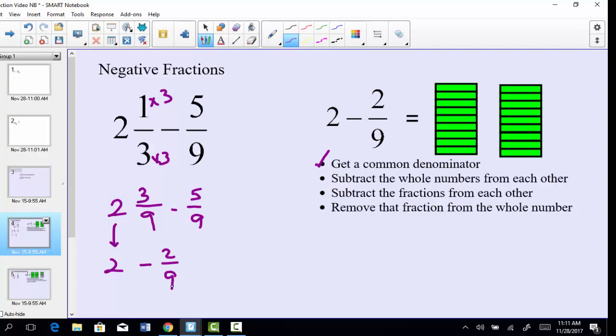So in other words, we have full 2. So if we take a look over here to the right and we look at this nice picture, we have two wholes and we want to pull out only two parts of the 9ths. We want to pull out those two parts. So what are we really left with? Well, we're left with one whole and 1, 2, 3, 4, 5, 6, 7/9 remains.